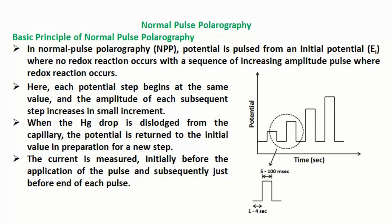In normal pulse polarography (NPP), potential is pulsed from an initial potential EI where no redox reaction occurs, with a sequence of increasing amplitude pulses where redox reaction occurs. Each potential step begins at the same value, and the amplitude of each subsequent step increases in small increments. When the mercury drop is dislodged from the capillary, the potential is returned to the initial value in preparation for a new step.